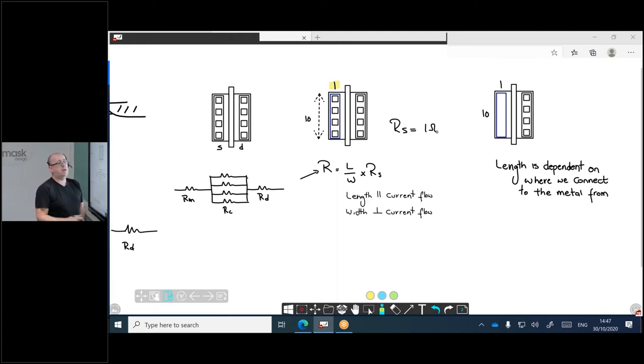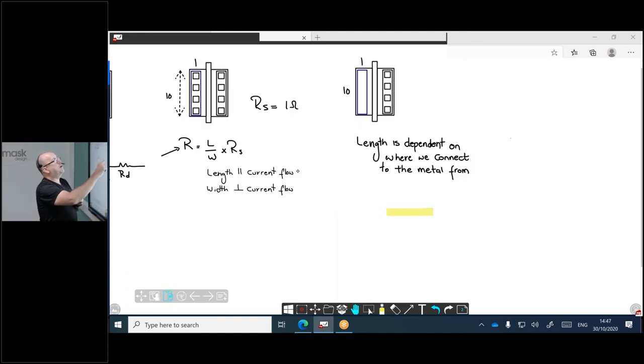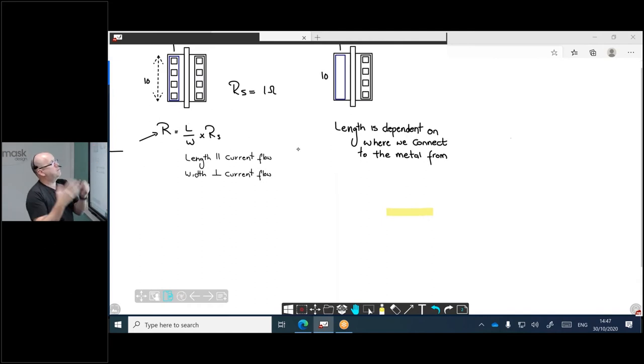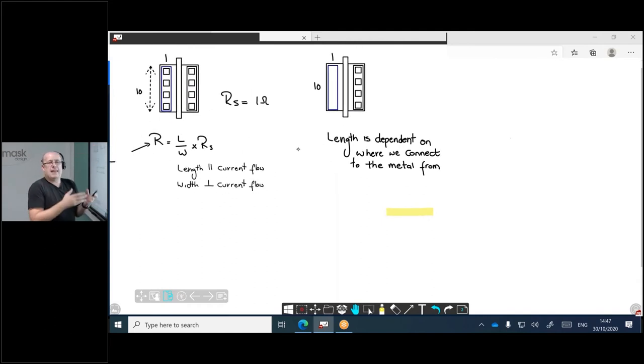Just to keep it easy and keep the maths easy. What we do know, of course, is that the length of any conductor is parallel to the current flow direction and the width of that conductor is perpendicular to the current flow direction. So length is dependent on basically where we're going to connect to this device from. So I've removed the contacts here and you can see there's no contacts, we're just dealing with metal. Is 10 the length or is one the length? Well, it really depends on what we're actually going to be doing.